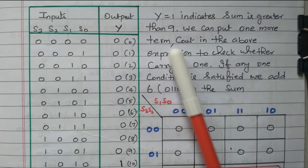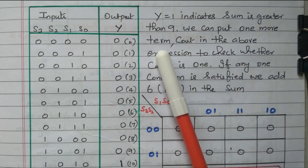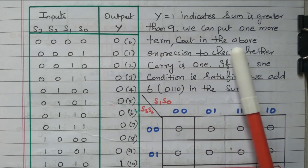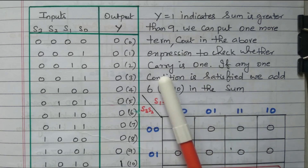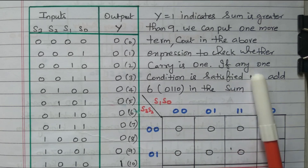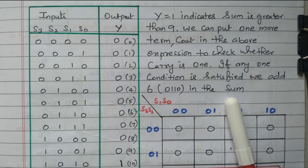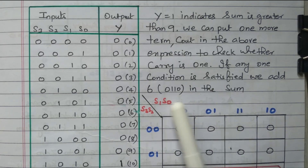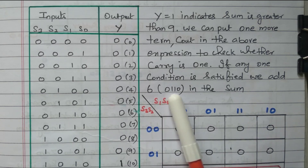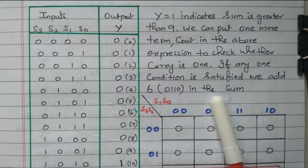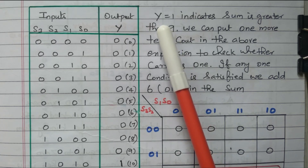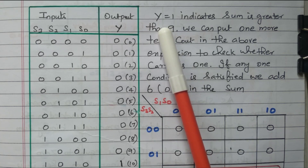Y is zero means less than nine. We can include one more term, C out, in the expression to check whether the carry is one. The carry is also taken into account. If any one condition is satisfied, we need to add six to the sum. So, for the BCD adder, if the sum is greater than nine, we need to add the binary equivalent of six — 0, 1, 1, 0 — in order to get the correct answer. Whether it is greater than nine or less than nine is indicated by Y: Y equal to zero means less than nine, Y equal to one means greater than nine.